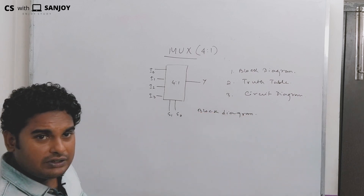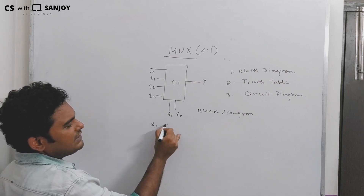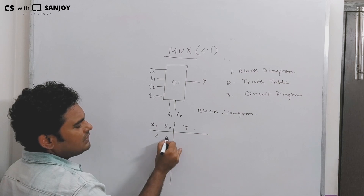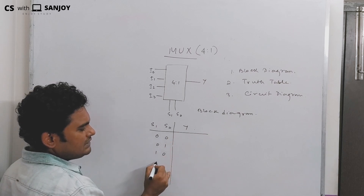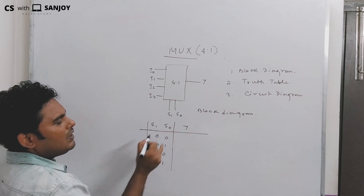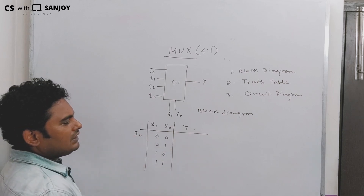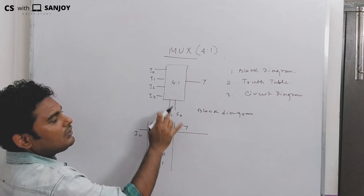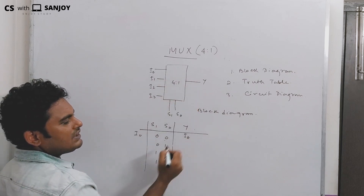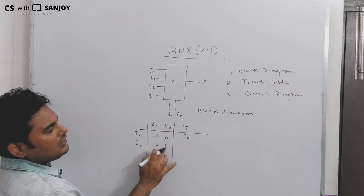Looking at the truth table: S1 and S0 are the select lines and Y is the output. When S1=0, S0=0 → select I0; when S1=0, S0=1 → select I1; when S1=1, S0=0 → select I2; when S1=1, S0=1 → select I3.